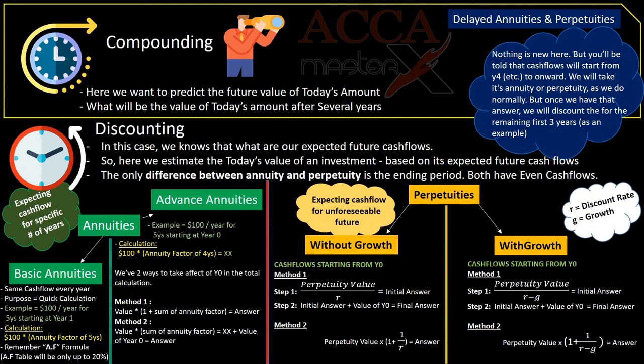Let's have a quick review of compounding and discounting. In compounding, we want to predict the future value of today's amount — for example, what will be the value of today's amount after several years. In discounting, we know our expected future cash flows and we want to estimate today's value of the investment based on those expected future cash flows.